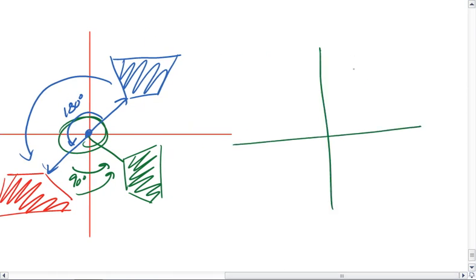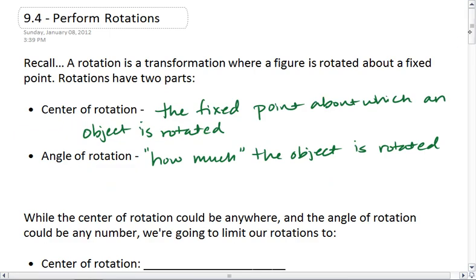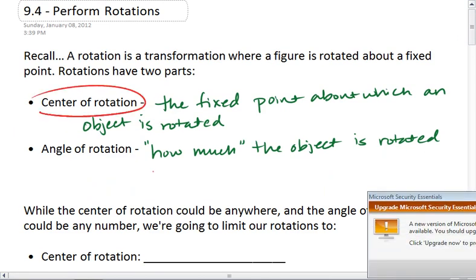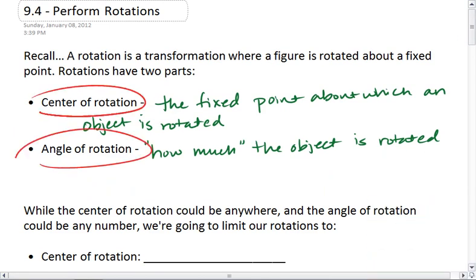We could have an object that is simply rotated this much, and we'll say that's about 20 degrees. But we do have those parts: we have the center of rotation and we have the angle of rotation.